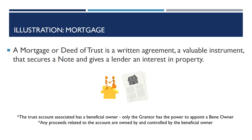For illustration purposes, we'll look at a mortgage. A mortgage or deed of trust is a written agreement — a valuable instrument that secures a note, which is another valuable instrument, and gives a lender an interest in property. Now, a mortgage or deed of trust is a trust agreement. All debt matters are matters of account, and there is an equity situation taking place. The trust account associated with it has a beneficial owner. Only the grantor of the mortgage trust account knows who the beneficial owner is, and only the grantor has the power to appoint a beneficial owner. Any proceeds related to the account go to the beneficial owner — they are controlled by and owned by the beneficial owner.